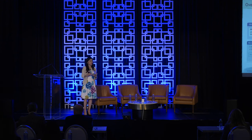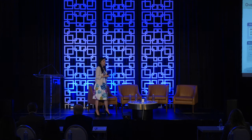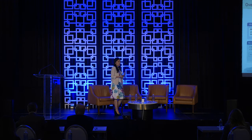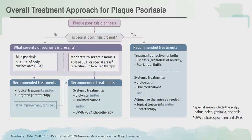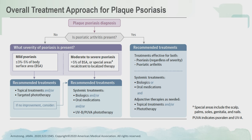So what is the overall treatment approach for plaque psoriasis? When we think about a patient in front of us with plaque psoriasis, we will first look at their skin. However, one of the first questions I challenge you to ask is: is psoriatic arthritis present? If a patient has psoriatic arthritis, you may go down the pathway of selecting a systemic medication even though they may have just 1% body surface area.